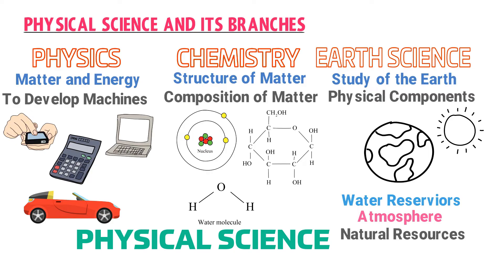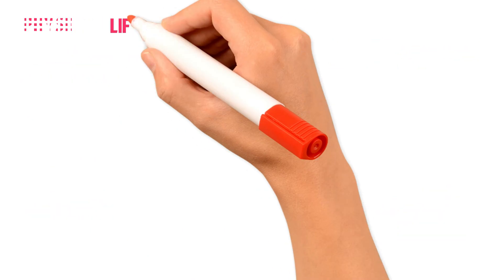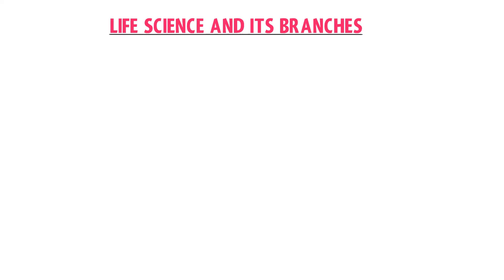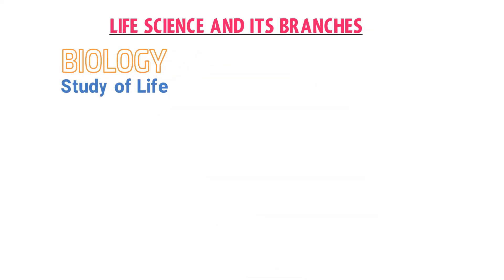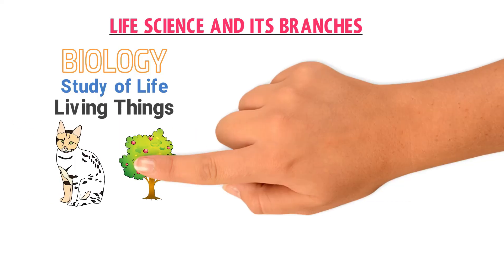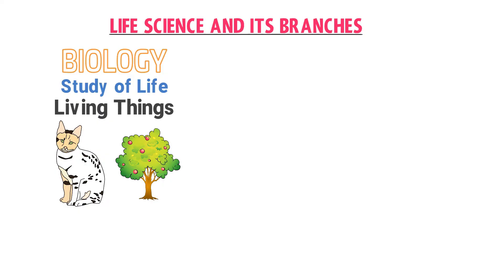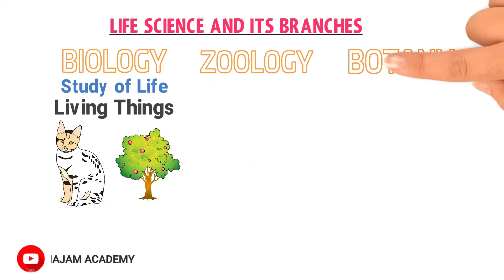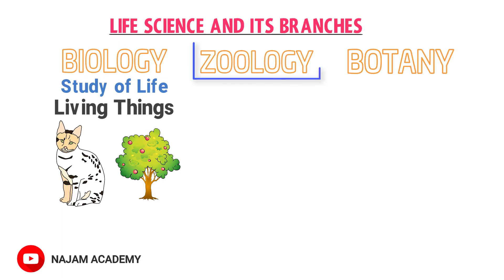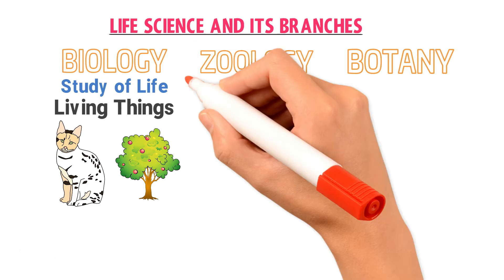In physical science, we study about physical objects — matter and energy — usually in the form of non-living things. The second part of natural science is life science. The most important branch of life science is biology, in which we study about living things, for example animals, plants, bacteria, etc.